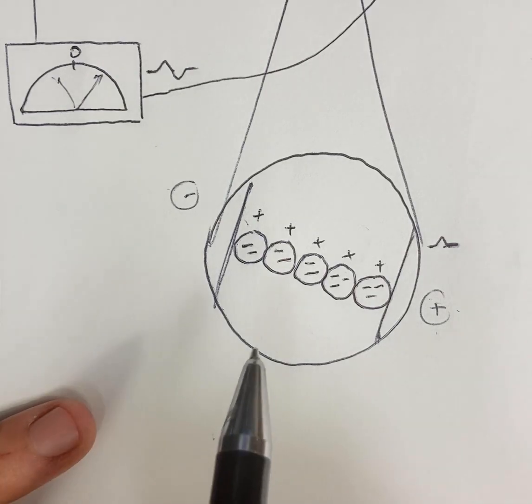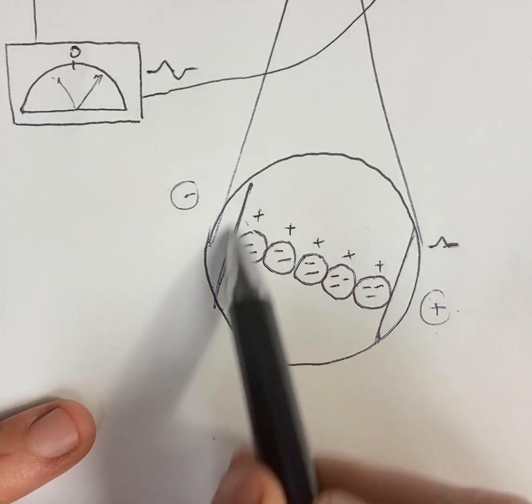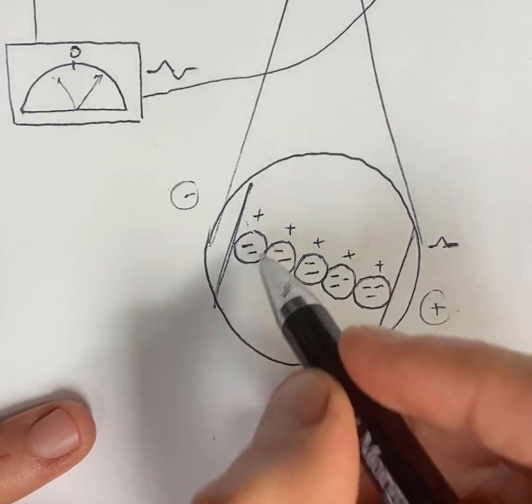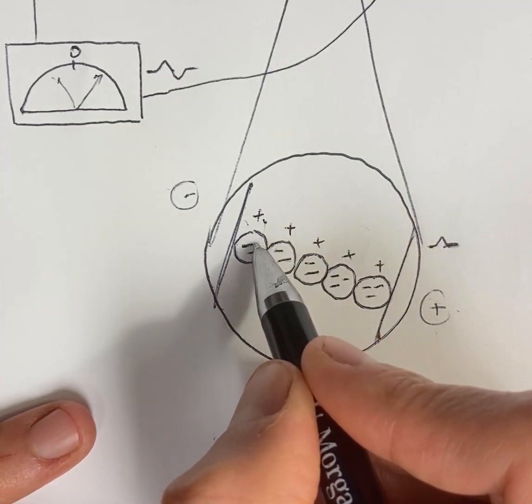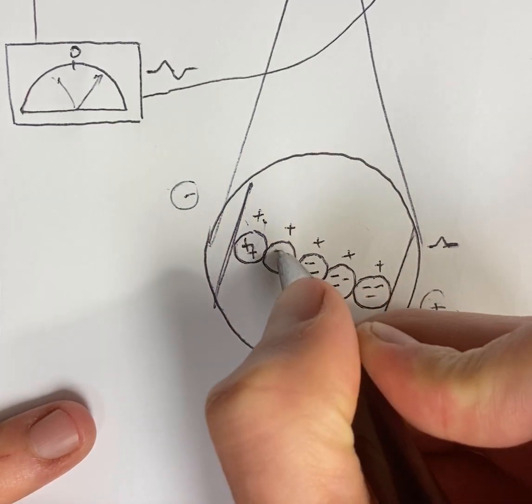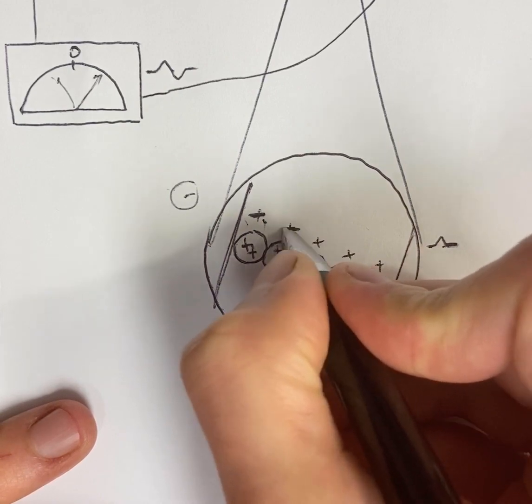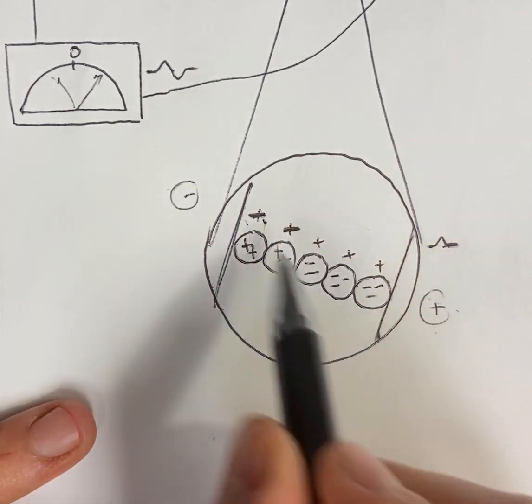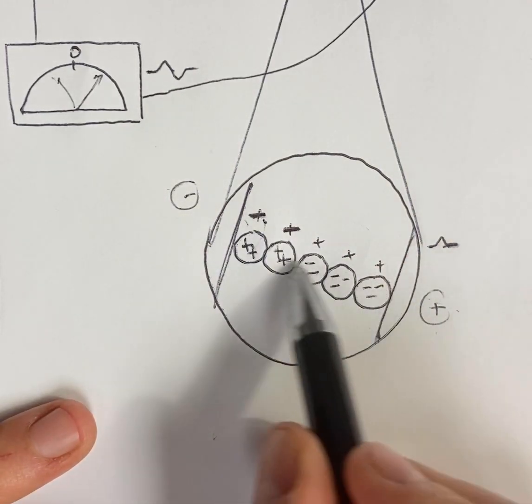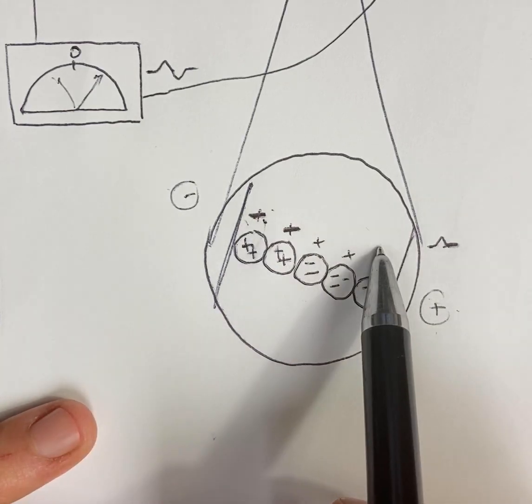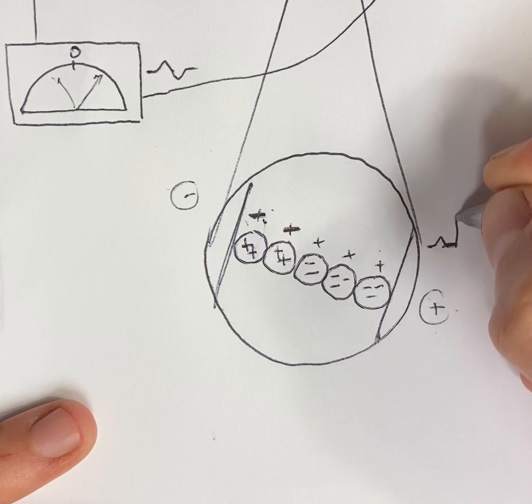When we start depolarizing from endocardium to epicardium, these subendocardial cells depolarize first. The sodium rushes in, the inside of the cells turns relatively positive, while the outside becomes relatively negative. Suddenly, in that moment mid-depolarization, there's a gradient—negative to positive—and that's what leads to the positive deflection of the QRS.